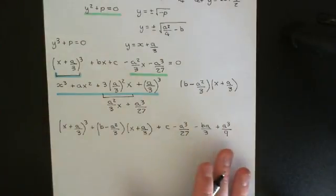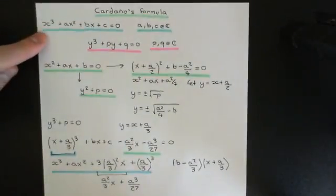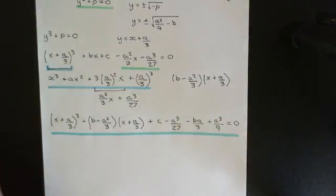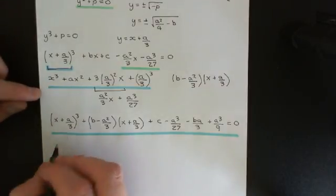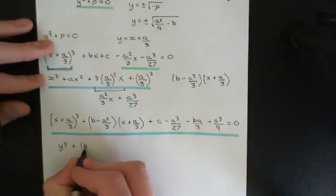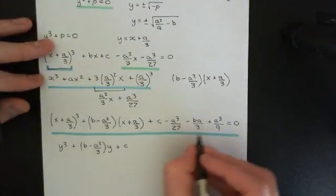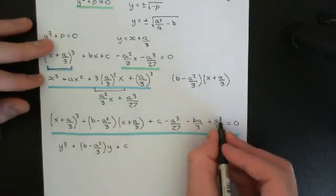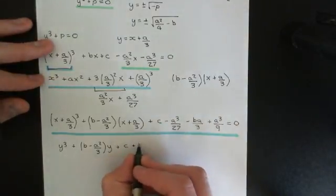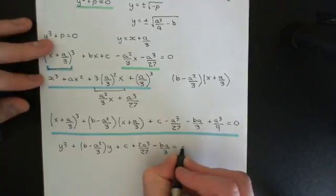Then we just need to make the constant term correct. We keep the plus c and the minus a cubed over twenty-seven, and now we just need to get rid of the constant term that the new first degree portion gives us. We need to get rid of b times a over three, so we'll need minus ba over three. We also need to get rid of the minus a cubed over nine that we'll have, so we add on a cubed over nine. If you expand this whole thing out, that will just return you back to your original cubic equation. So all I have done is take this equation and rewrite it in this clever way. Now I can just replace x plus a over three with the new variable y: let y equal x plus a over three, and we get y cubed plus b minus a squared over three times y plus c plus 2a cubed over twenty-seven minus ba over three is equal to zero.